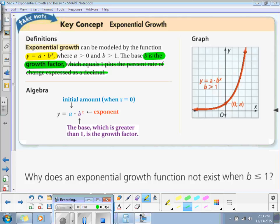So again, the formula: we have y equals a times b to the x, where the initial amount is your a, the b is the growth factor, and exponent, your x, is your independent variable. This is what the graph looks like for an exponential growth equation, or function.